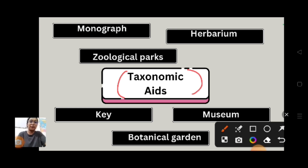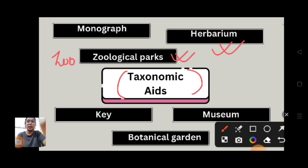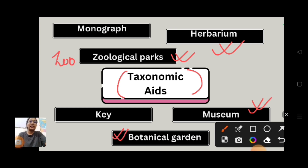Now we are looking at taxonomical aids. Herbarium we have already discussed. Zoological park - the zoo - is where you can see captive animals. Museum you already know. And botanical garden is where live plants are planted. Next we will discuss monographs and key, which will be new concepts.